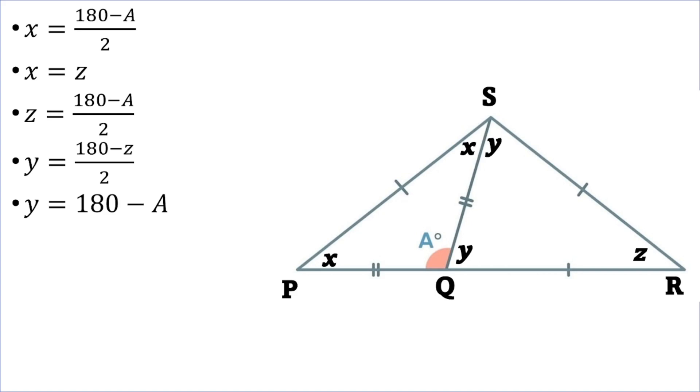Looking at these last two equations, if they're both equal to Y, we can equate them to each other. So we'll have that 180 minus Z over 2 is equal to 180 minus A.